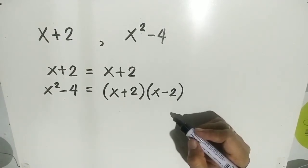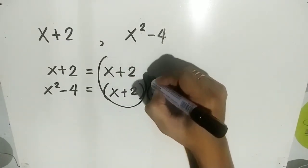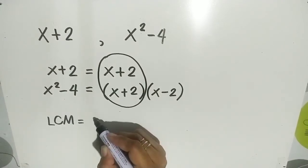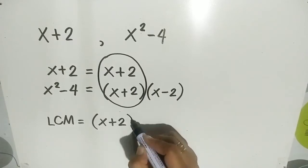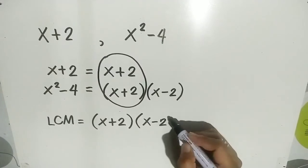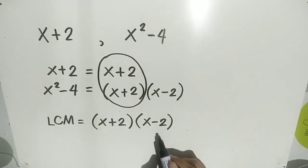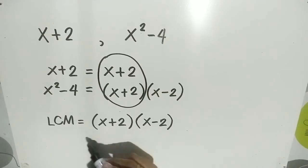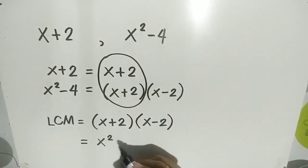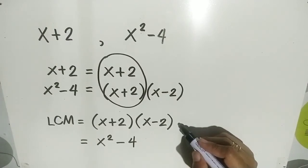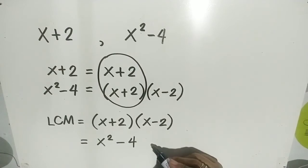Next, let's encircle the common factor: x plus 2. Then we find the LCM: common factor x plus 2, times the non-common factor x minus 2. You can express the LCM in factored form as (x plus 2)(x minus 2), or in expanded form as x squared minus 4. So x squared minus 4 is the LCM in expanded form.